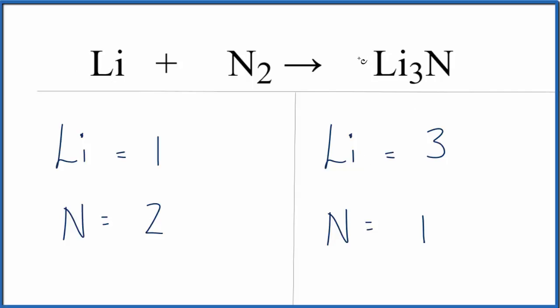So if we put a 2 in front of this Li3N, that should balance our nitrogens. We have one nitrogen times two, and that gives us two. So now the nitrogen atoms, they're balanced.